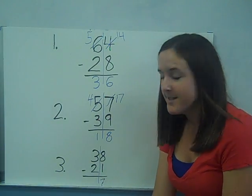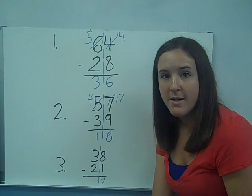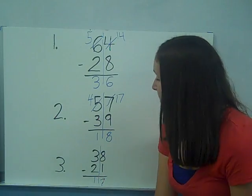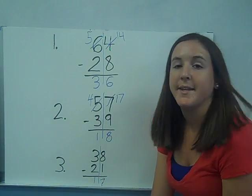I look at my tens. Three is bigger than two. I can go ahead and subtract again. Three minus two is one. So thirty-eight minus twenty-one is seventeen.